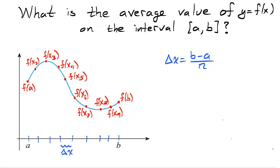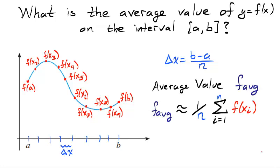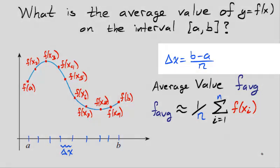Now rather than creating rectangles to find the area, we will use the endpoints of the subintervals to create an approximation of the average value. The average value f average on the interval ab is approximated by the sum of the heights of the endpoints, divided by n, the number of endpoints.